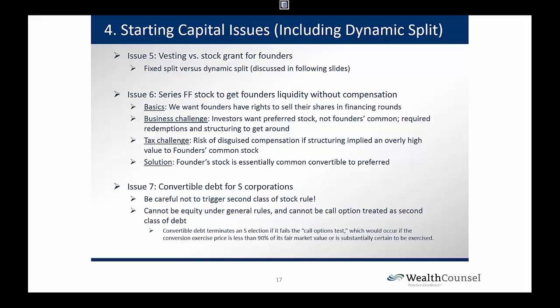Issue number seven: convertible debt for S corporations. We have to be careful because one of the requirements of an S corporation is that it may have only one class of stock. So we're always careful about issuing instruments in an S corp that could be considered a second class of stock. Second class is determined not by voting rights, but by distribution rights. There are safe harbors, and if that debt fails the call options test under the safe harbor, we might have a second class of stock. The call option test generally says that if the debt can convert to common at less than 90% of its fair market value on the date of issue, or if it is substantially certain to be exercised, then we have a second class of stock. So we have to be careful with convertible debt in an S corp.